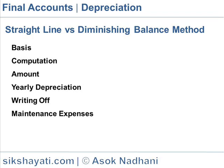Amount: In the straight line method, the depreciation amount is constant each year. In the diminishing balance method, the depreciation amount declines each year.